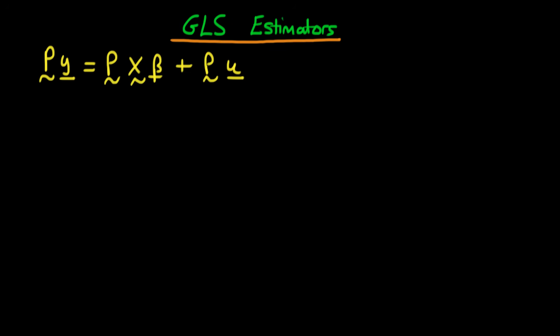In this video, we're actually going to derive the transformation matrix P, which forms our GLS estimators, which happen to be BLUE. Remember what we did is we took our original model and we multiplied both sides by this as yet unknown transformation matrix P.